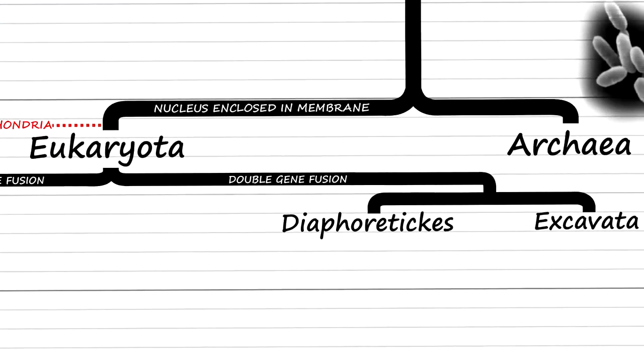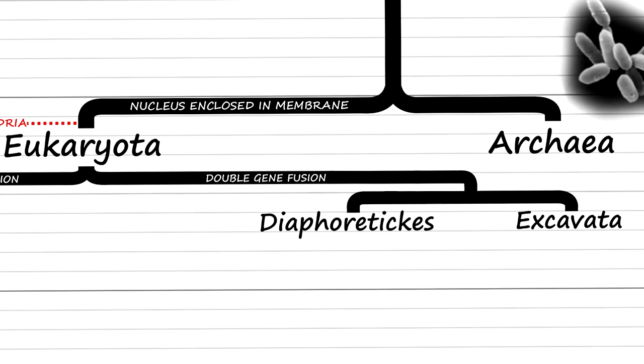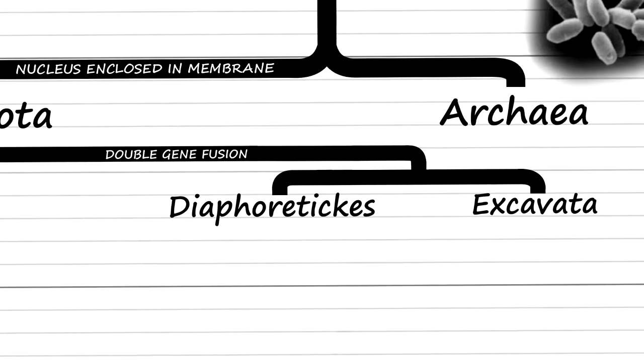The other lineage, including the ancestors of plants, would retain the double gene fusion, and we will take a look at this lineage first.